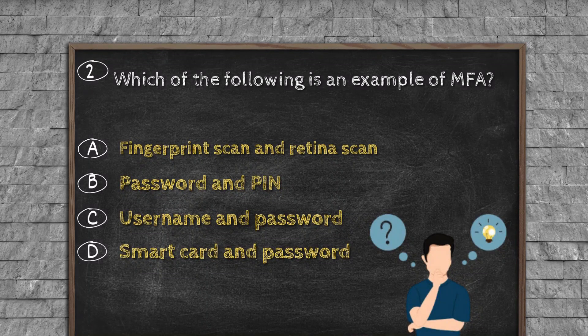Question number two. Which of the following is an example of MFA? Option A, fingerprint scan and retina scan. Option B, password and PIN. Option C, username and password. Option D, smart card and password.